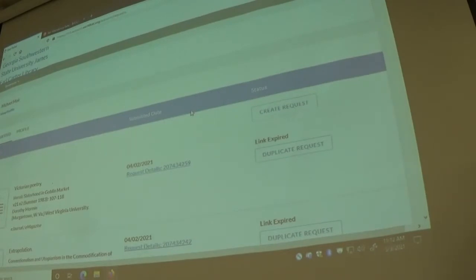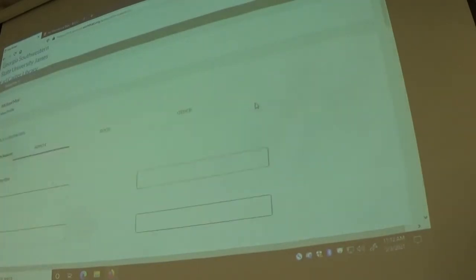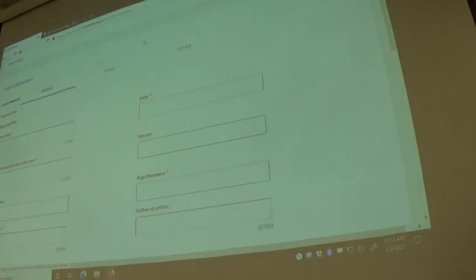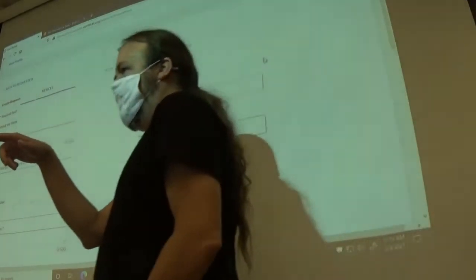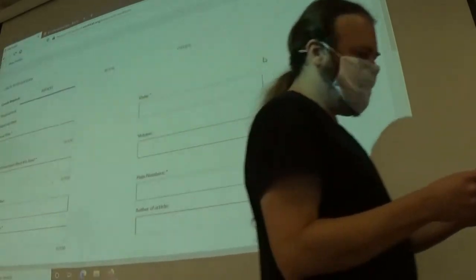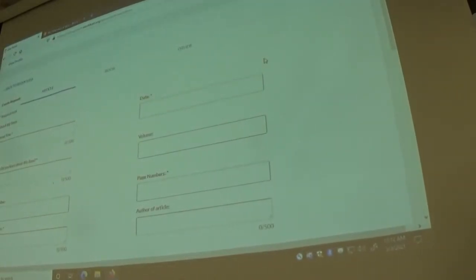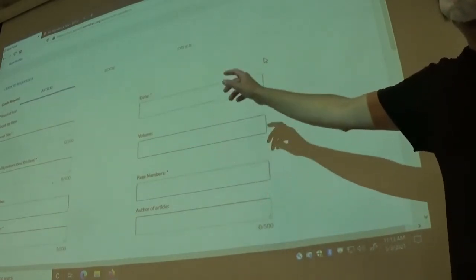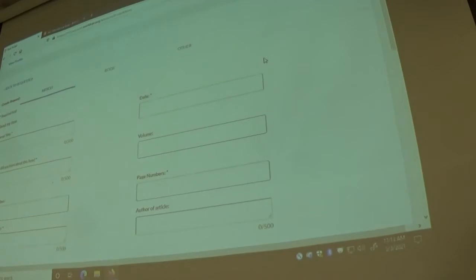If you've got something that you need, you just click on create request and you can request an article, a book, or other. Usually other is going to be like a book chapter. Can I see somebody's bibliography for a second? Say that I want this first article here on Louise Bennett. All the information that you need to get the article from deposit is here in the citation.